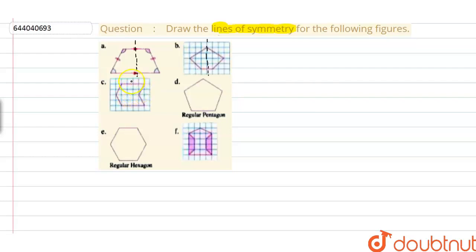Now if we observe this next figure, we know that there should be a line which divides this figure into two equal halves. Clearly we can say that this line is going to divide this figure into two equal halves.